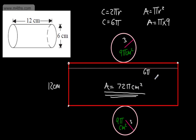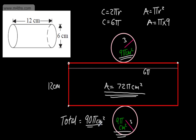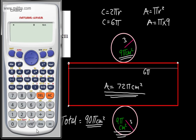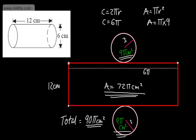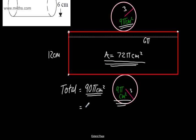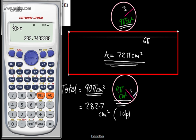So we've got the area of the rectangle or the curved section, and we've got the two circles. So if we add 9 pi and 9 pi and 72 pi, that's going to give a total surface area of 90 pi centimetres squared. I've kept this nice and exact, and we can go ahead and find that in the calculator. 90 times pi gives us 282.7, correct to one decimal place. So the total surface area is 282.7 centimetres squared.